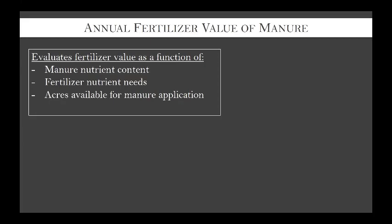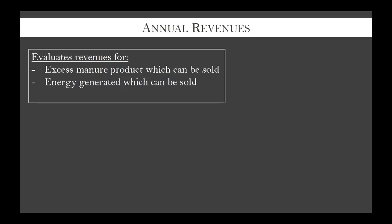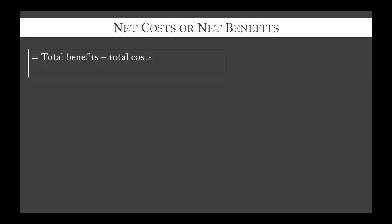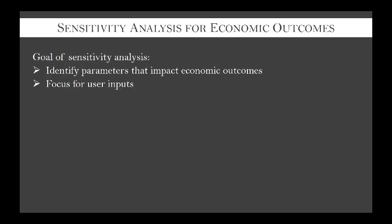The fertilizer value is a function of manure nutrient content, fertilizer nutrient needs on the field, how many acres are available for manure application, and whether the farmer is applying for nitrogen or phosphorus - these can all significantly impact how much manure can be applied per acre and the economic value of each nutrient. Revenues could come from excess manure products like compost or separated solids, and also from energy generated - whether electricity sold to the grid or natural gas integrated into the pipeline. Net costs or net benefits are simply total benefits minus total costs.